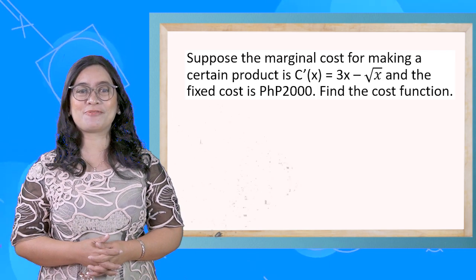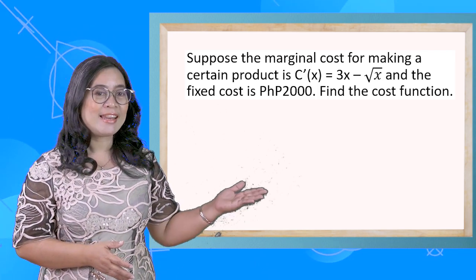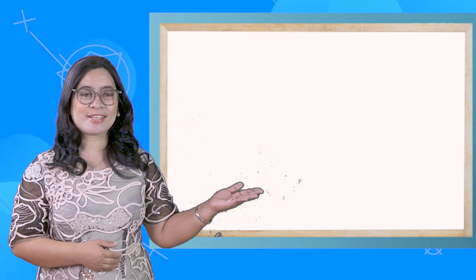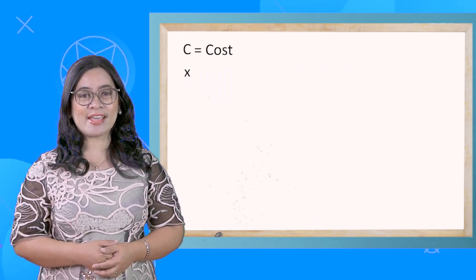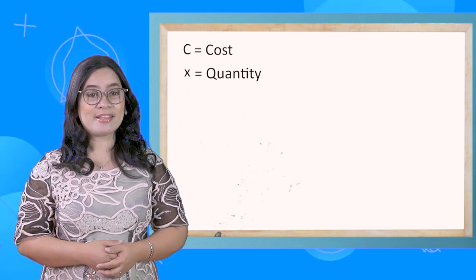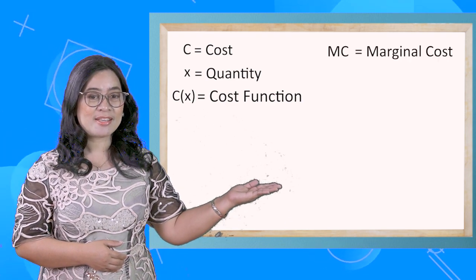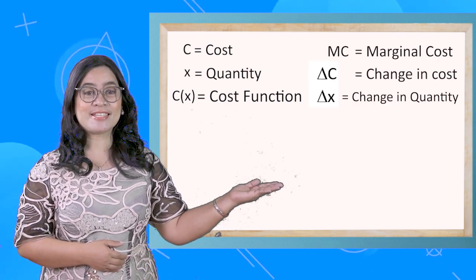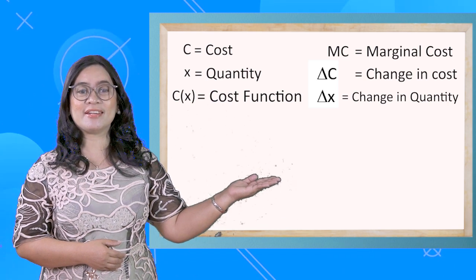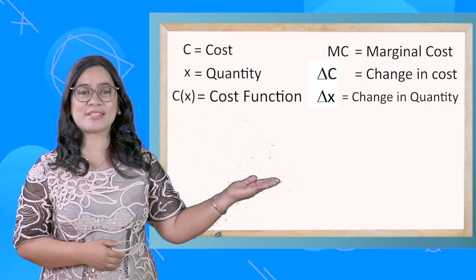First, let's define marginal cost. If C is the cost and x is the quantity, then C(x) is the cost function, MC is the marginal cost, ΔC is the change in cost, and Δx is the change in quantity.